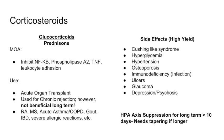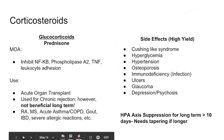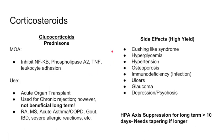Steroids are used for everything. In this context, we're talking about acute organ transplantation and chronic rejection. Other uses include rheumatoid arthritis, MS, asthma, COPD, gout, irritable bowel, severe allergic reactions, and many more. It's extremely important to know the side effects of steroids.